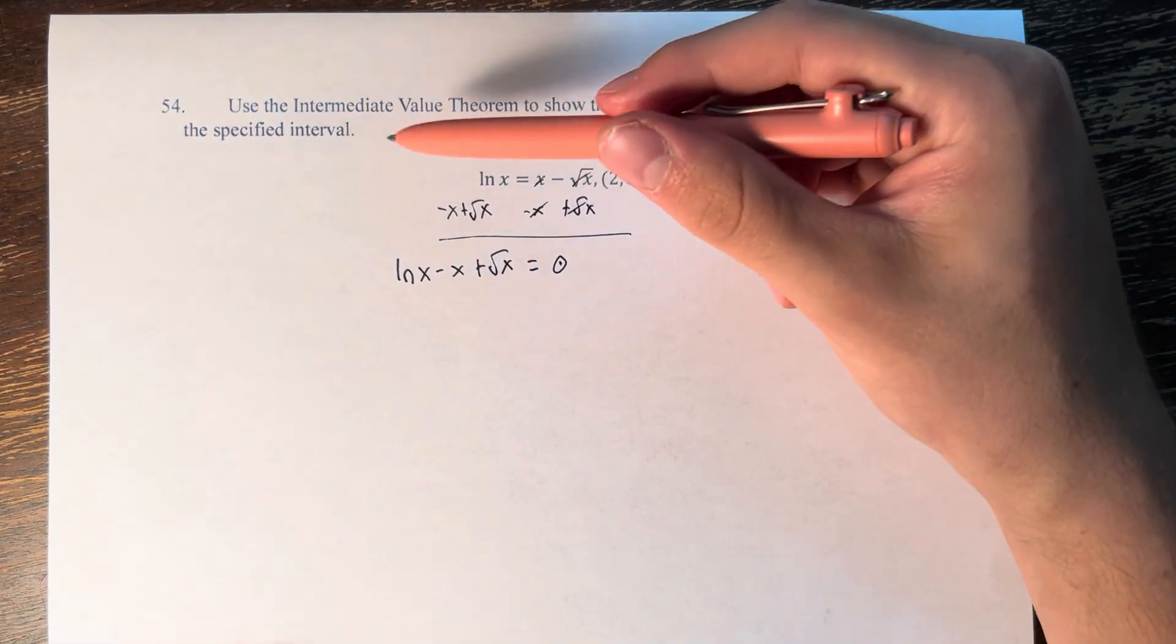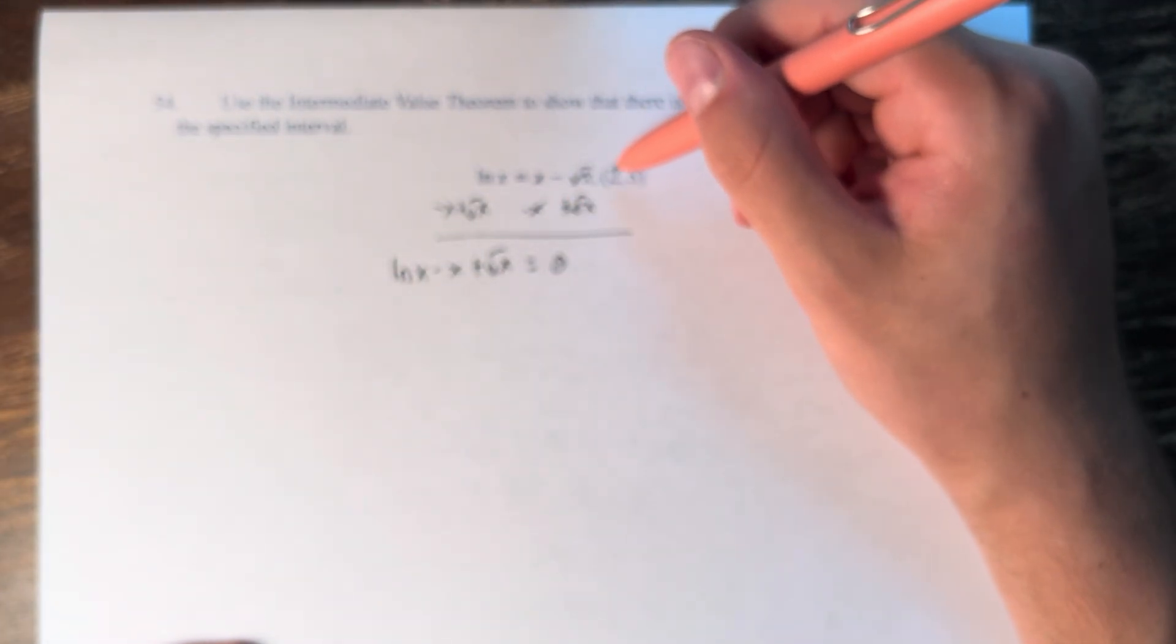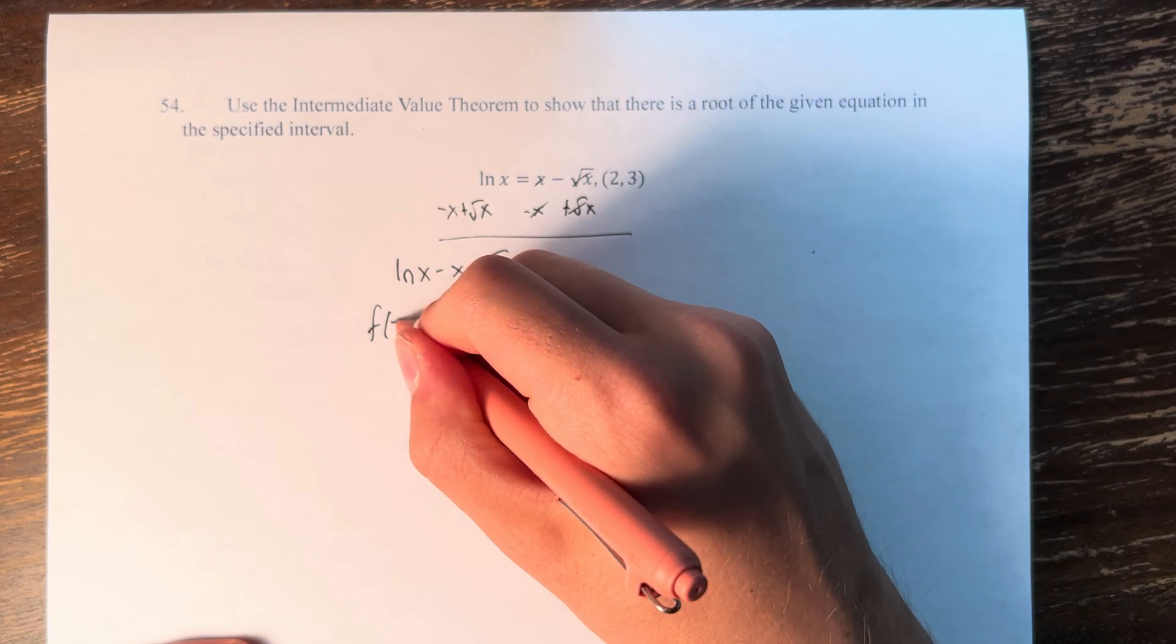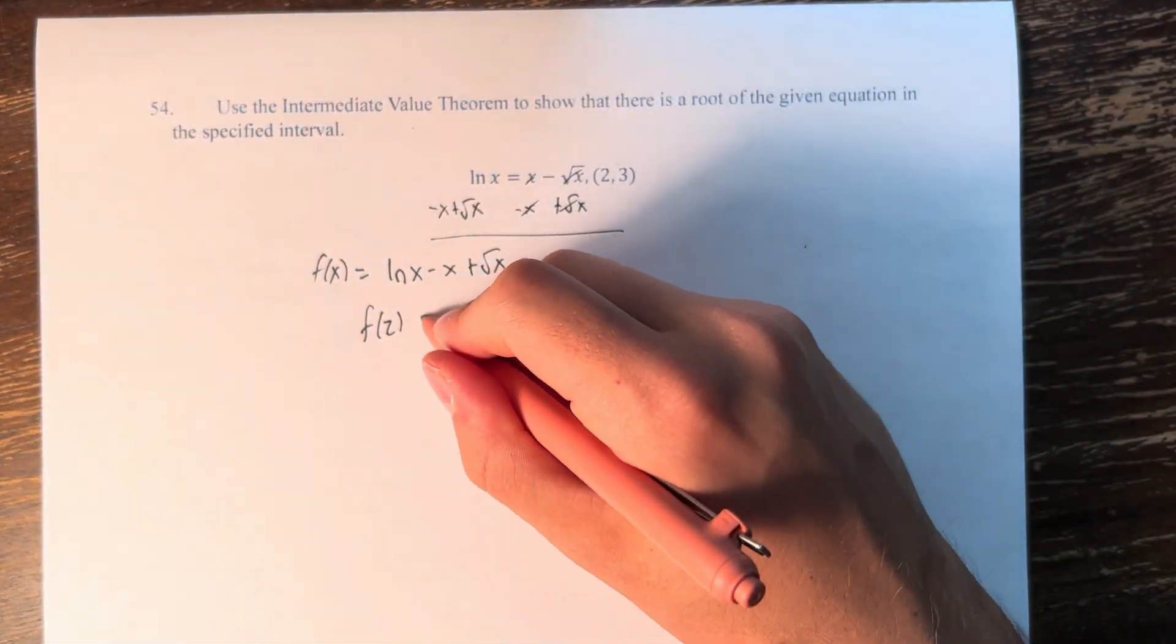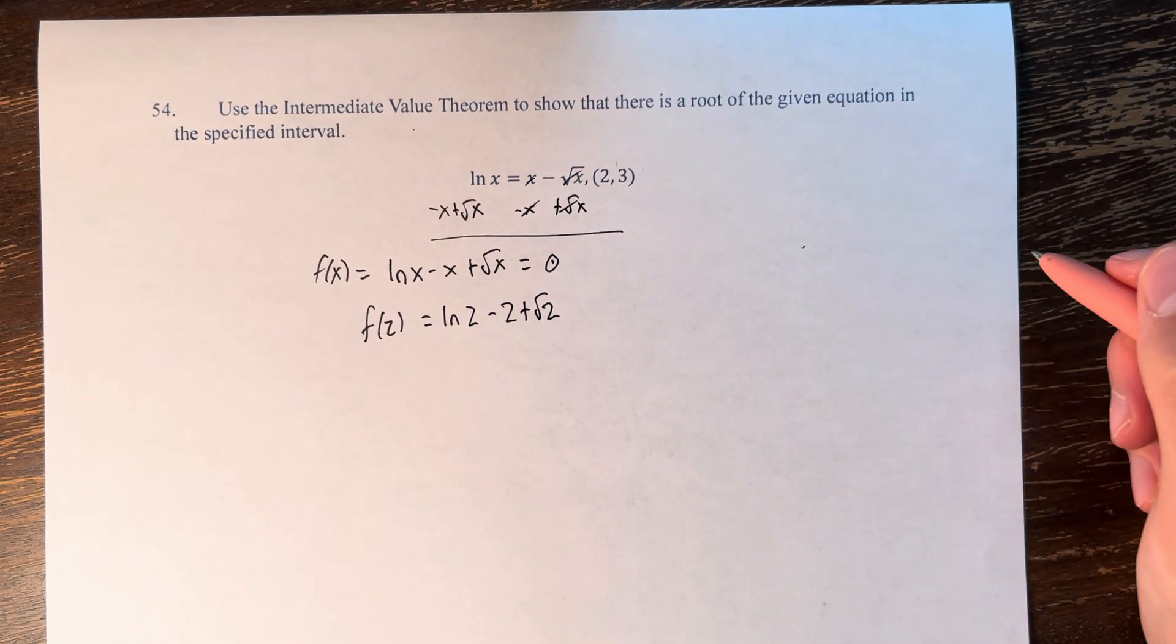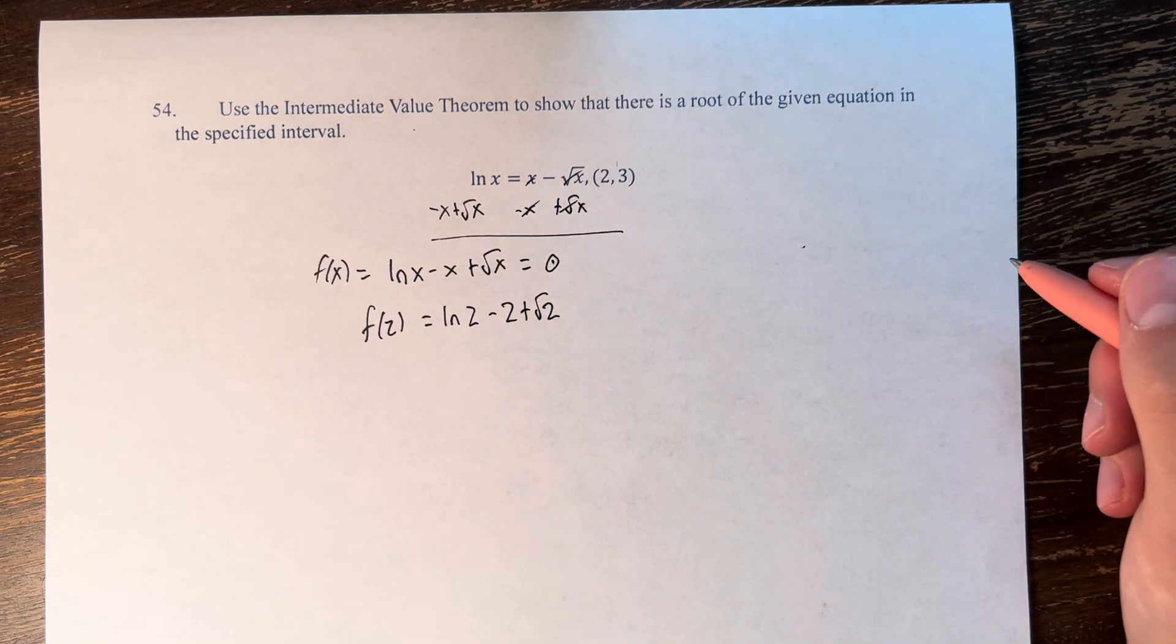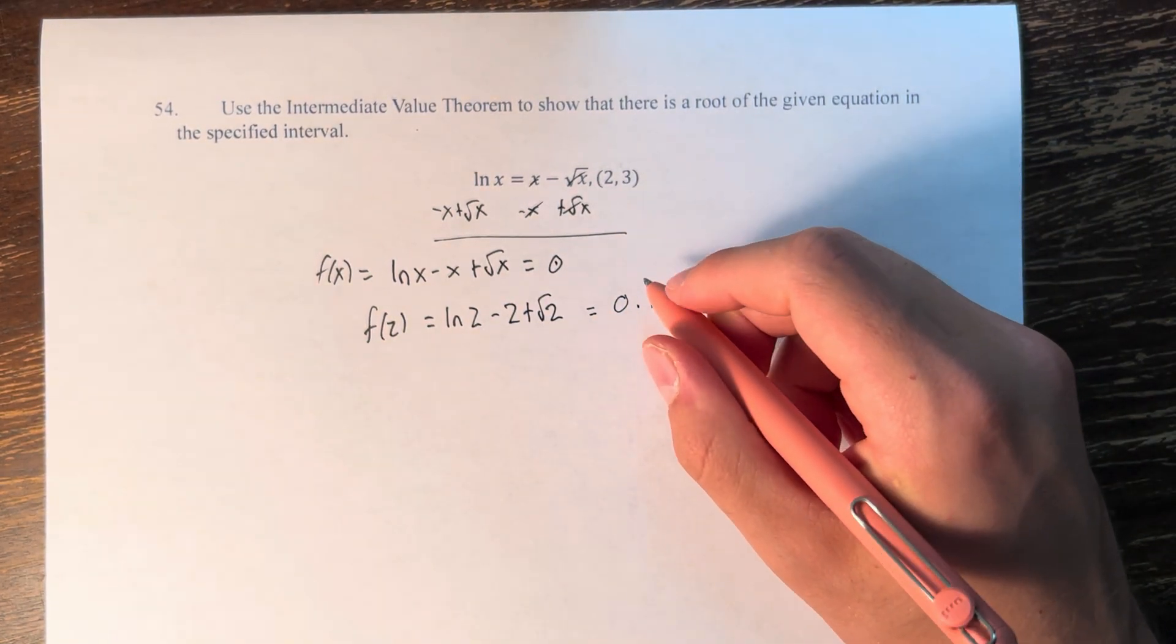We can say by the Intermediate Value Theorem that if this is f(x), we're looking for the roots of this function. f(2) = ln 2 - 2 + √2, which equals roughly 0.107.